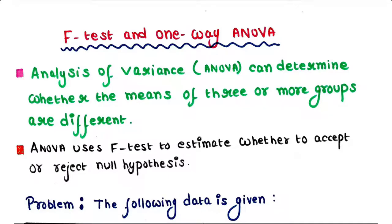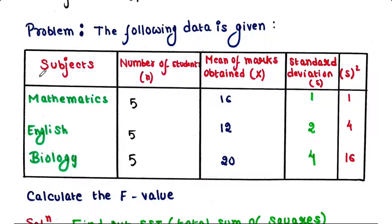Before defining F-test and one-way ANOVA, we will see an example first. Suppose we have three groups here: this is the first group, this is the second group, and this is the third group. In this first group we have five students who qualified mathematics exam, and mean of the marks that they obtained in mathematics is 16. In this second group we have again